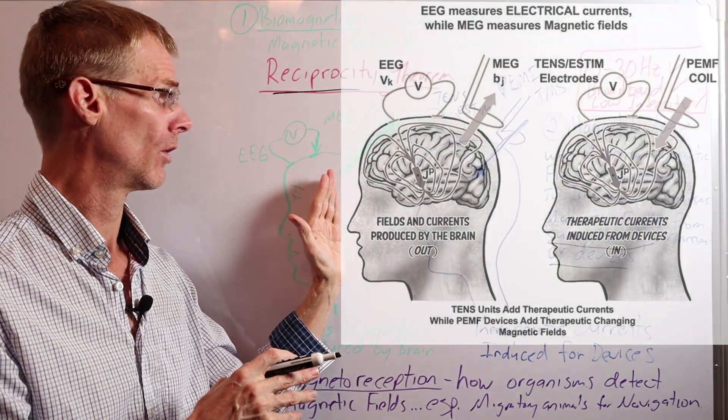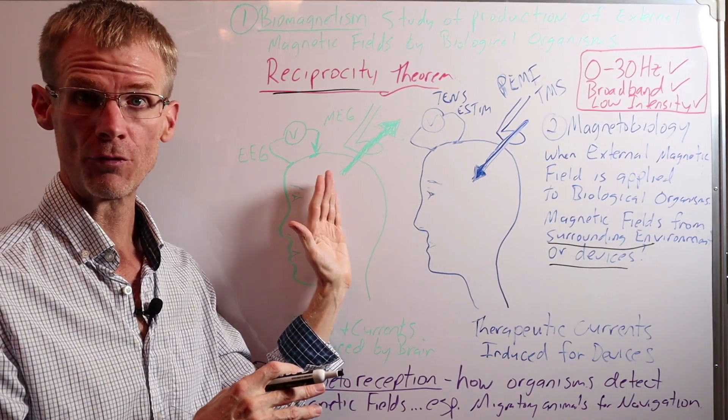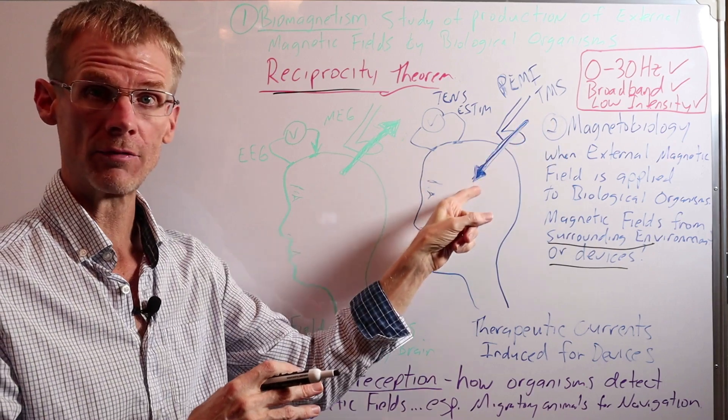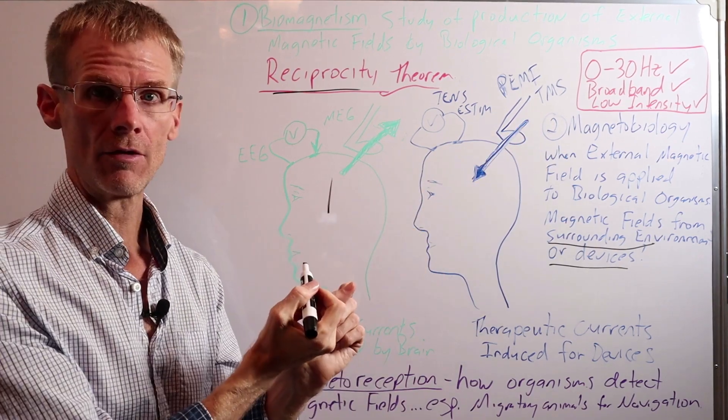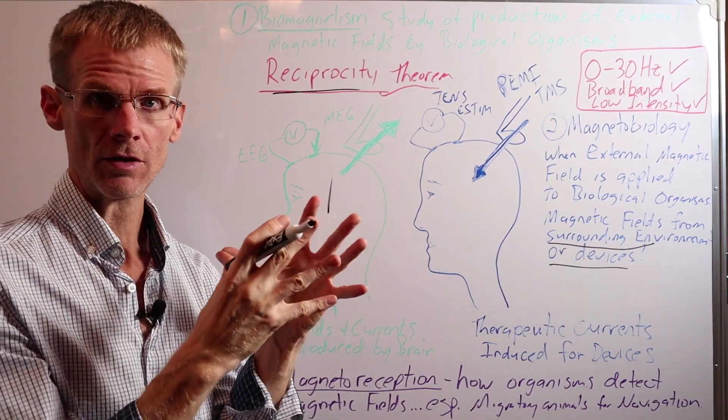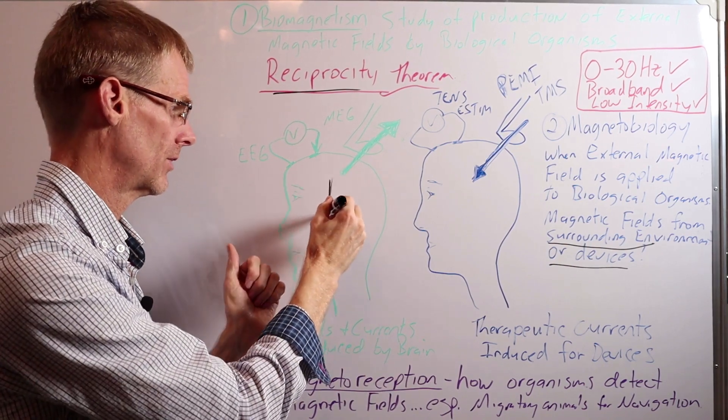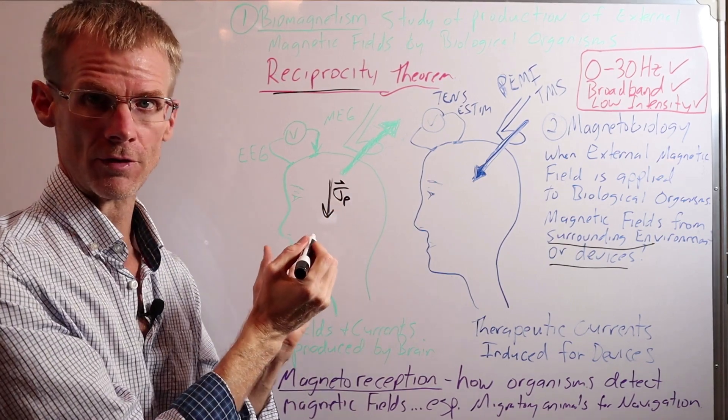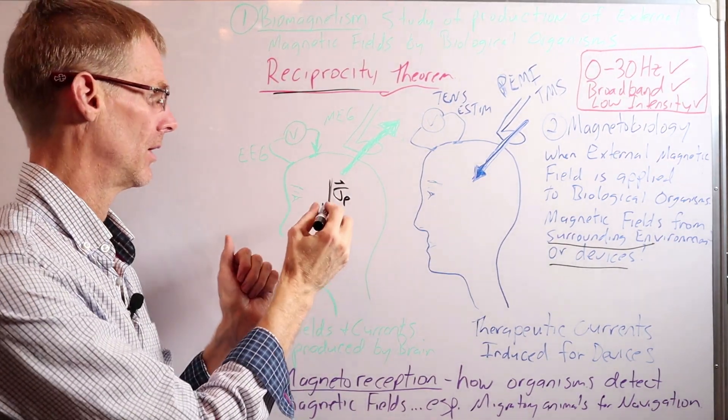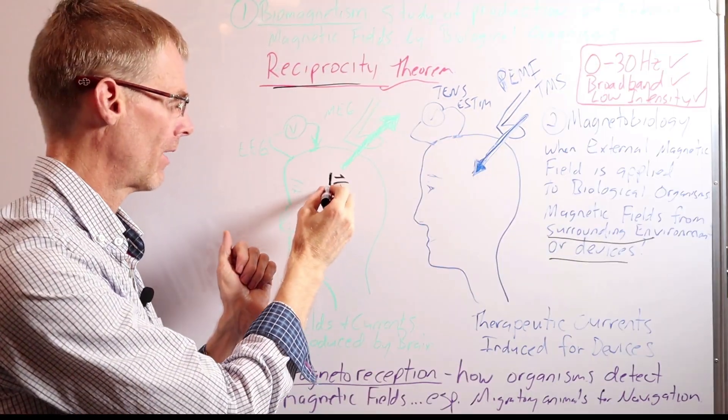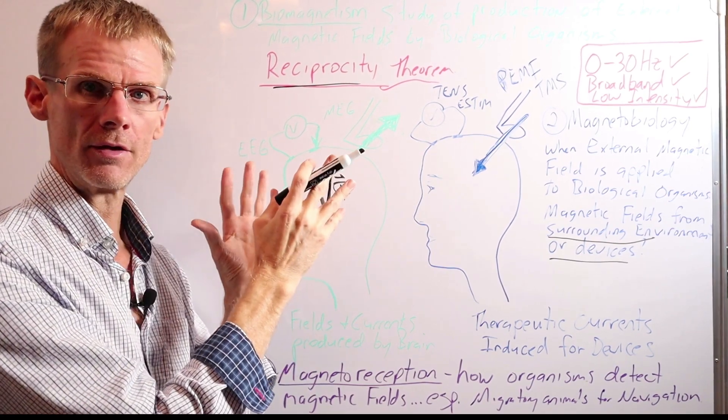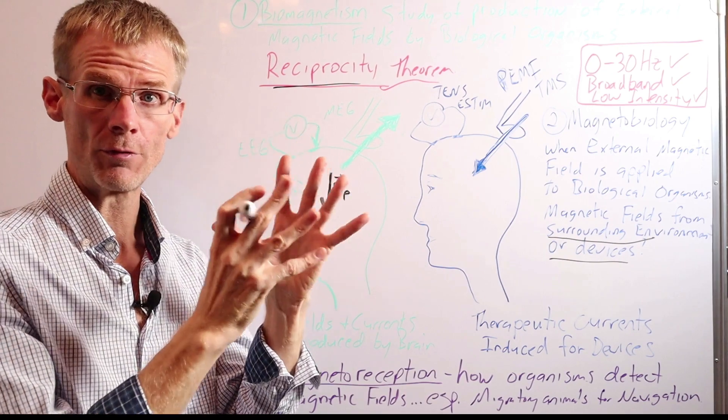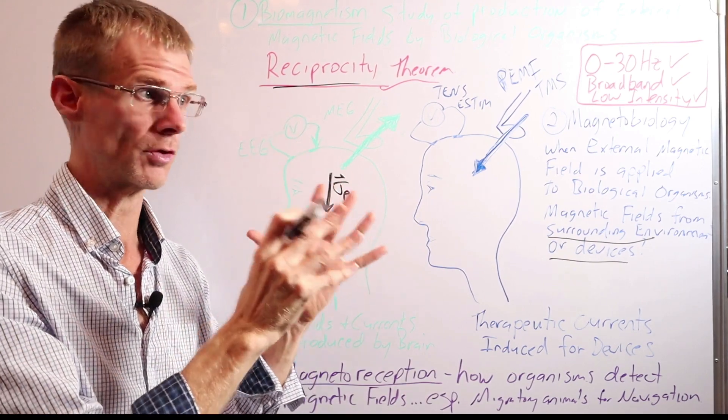So over here, we're measuring the magnetic fields coming from the brain. And over here, we're applying magnetic fields to the brain. Now in both cases, the kind of center of it all is going to be currents within the brain. So over here, and J is just a little subscript in physics for current, it's a current density. So over here, the brain and all the neuron nerve activity in the brain has all these electrical impulses. And we know from Ampere's law that electrical currents produce a magnetic field.